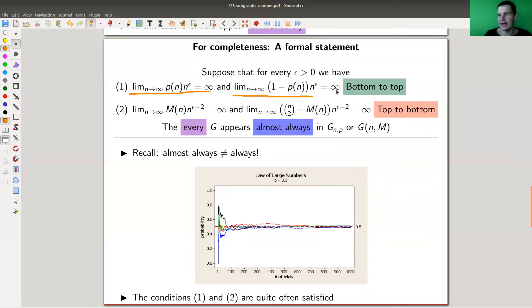Because I now even allow p to vary with n, and if p varies with n you need this condition, and then you get the statement that we want. For fixed p it's always good, but if p varies we need those conditions to get the correct statement, and the statement is every G appears almost always in those graphs.